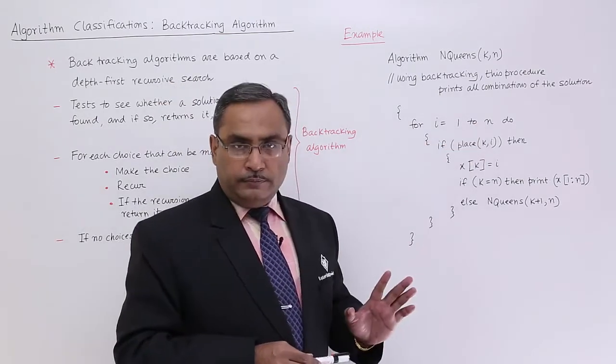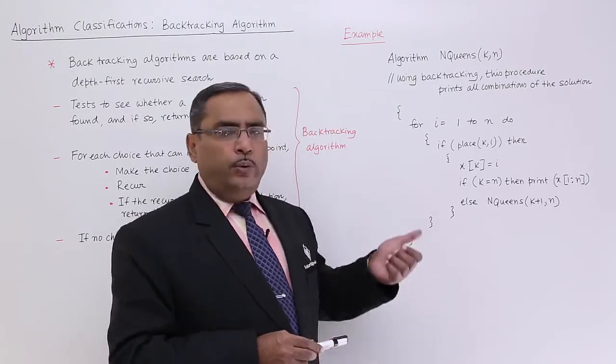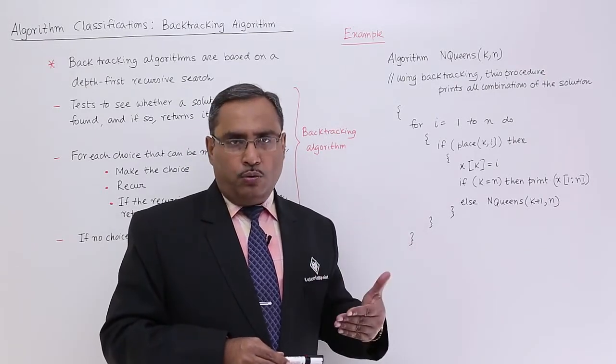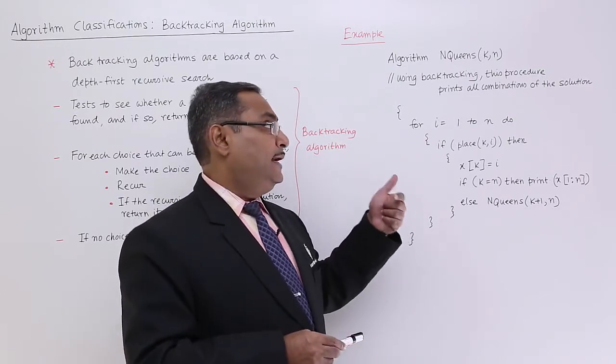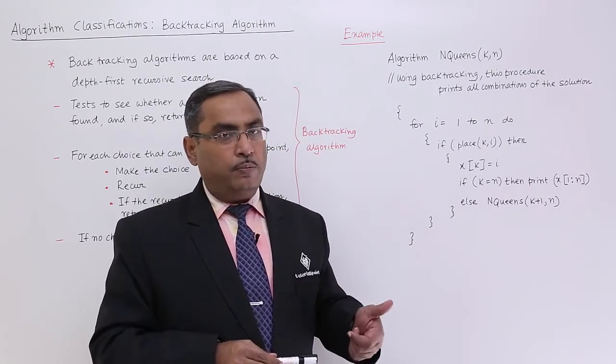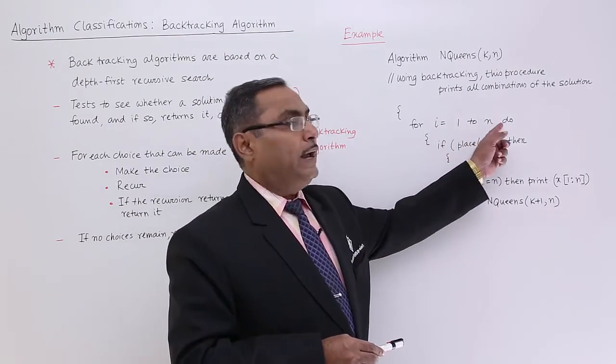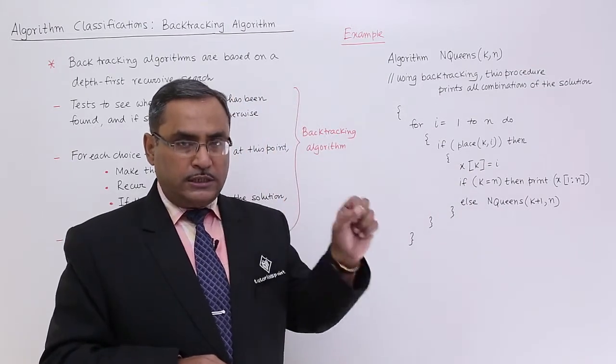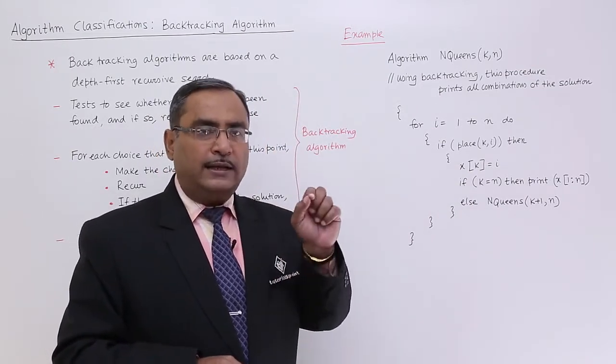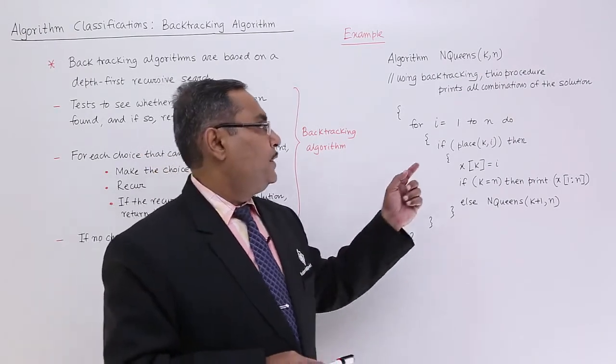For i is equal to 1 to n, because that Queen is to be tested, we know that the kth Queen must be placed at the kth row, because first Queen at the first row, second Queen at the second row. The kth Queen will be placed at the kth row, but we do not know the respective column number. Here for i is equal to 1 to n, that means we are searching for the columns. Column-wise we are searching that where that kth Queen at the kth row, in which column i it can be placed.